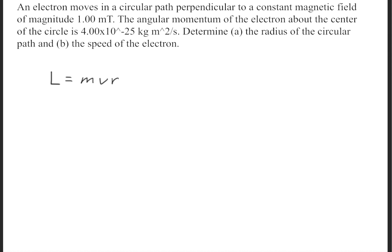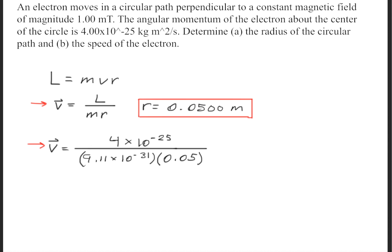Now in order to solve part b, we're going to once again use the angular momentum formula. And we're going to solve for the velocity. So recall that the radius was 0.05 meters. And now we have all the necessary information to plug it into the formula. Recall that the mass of an electron is approximately 9.11 times 10 to the negative 31st kilograms.